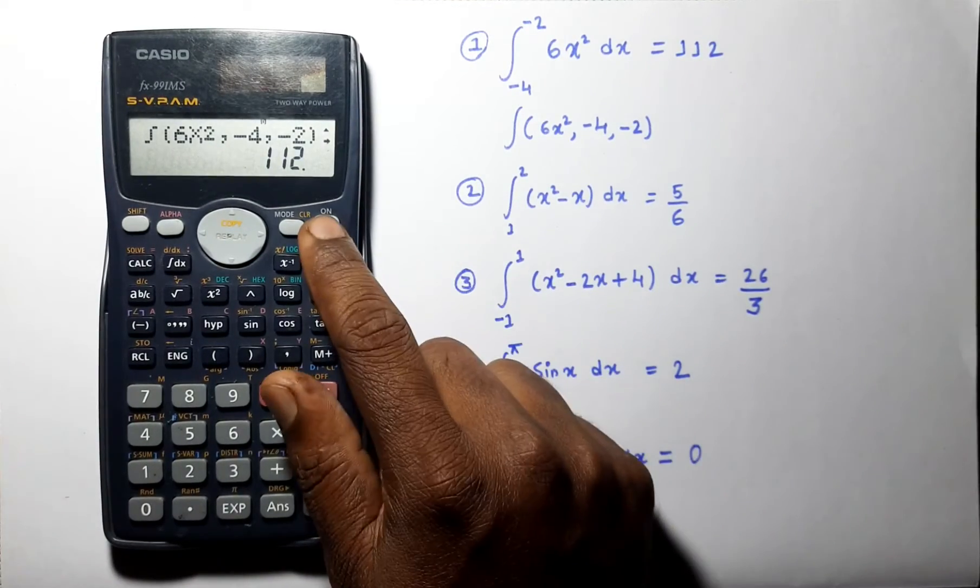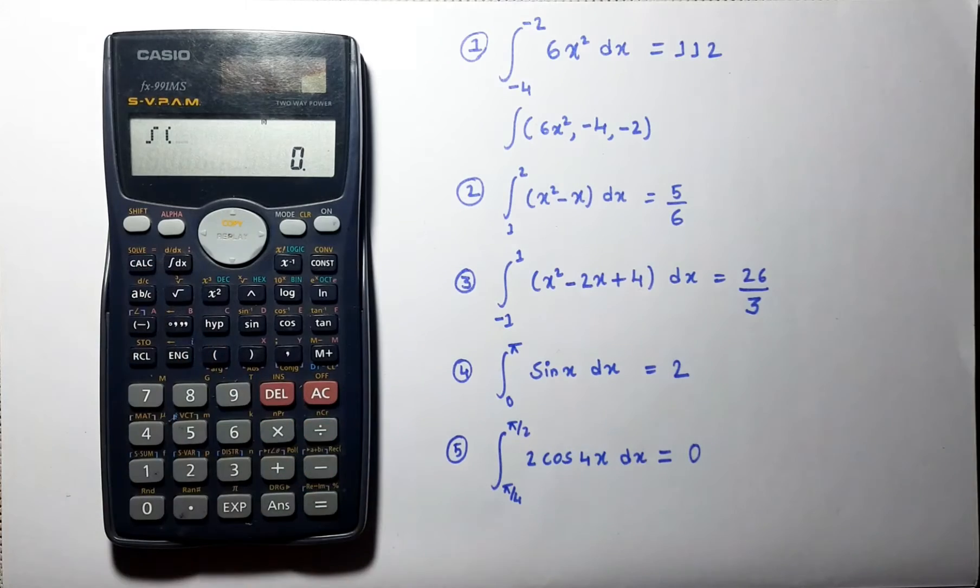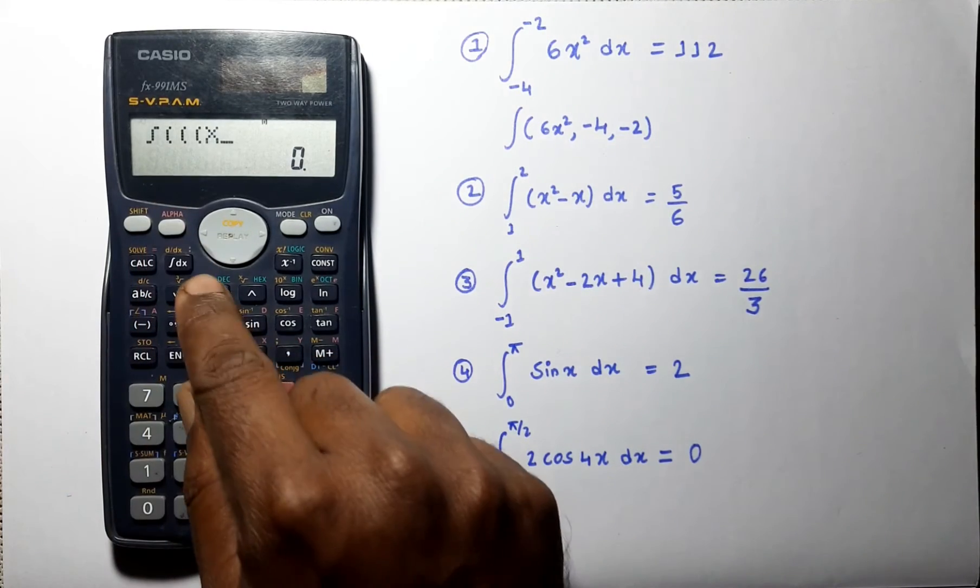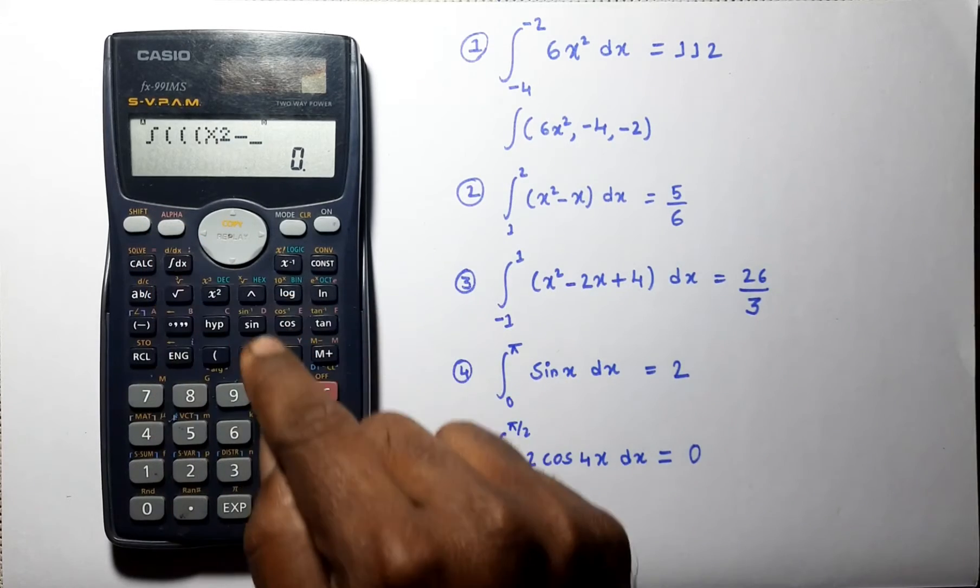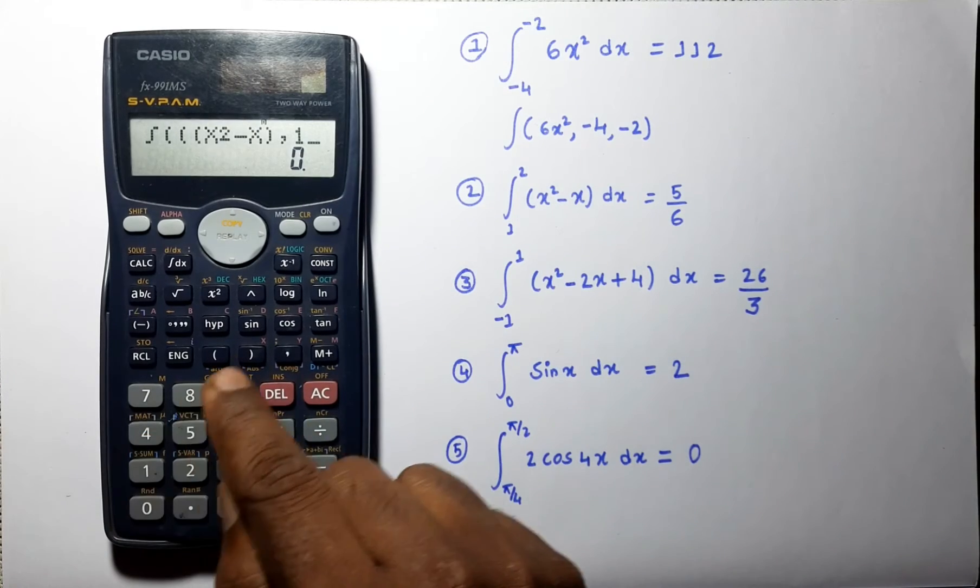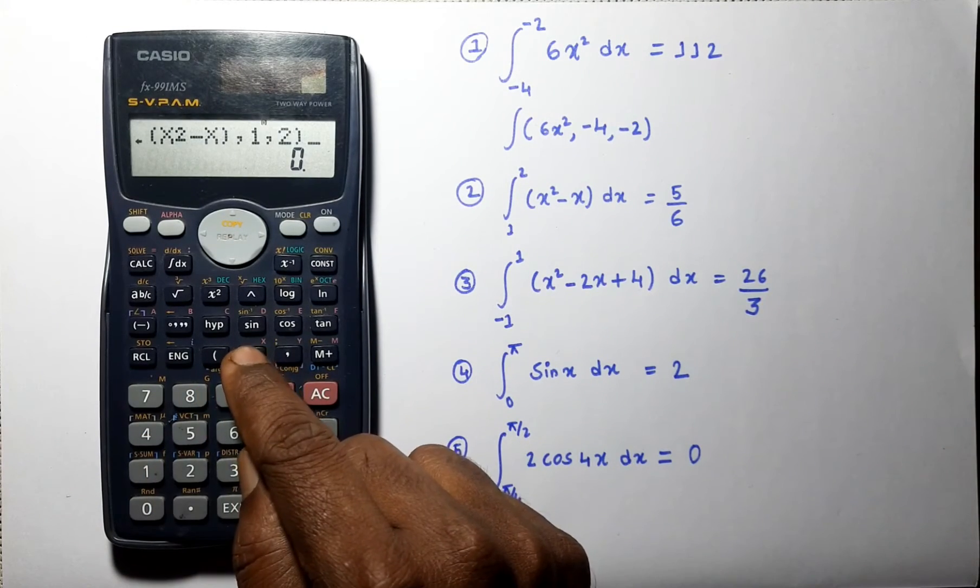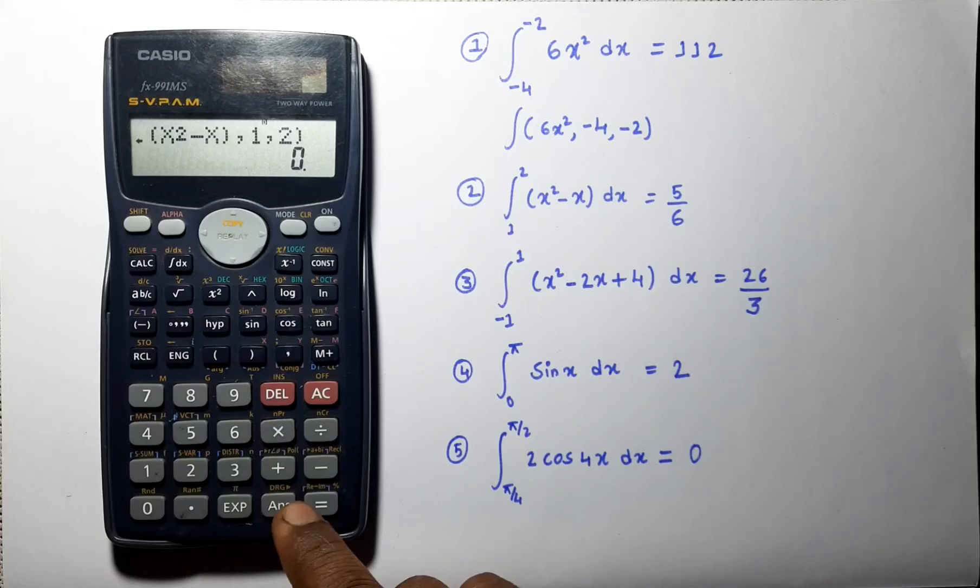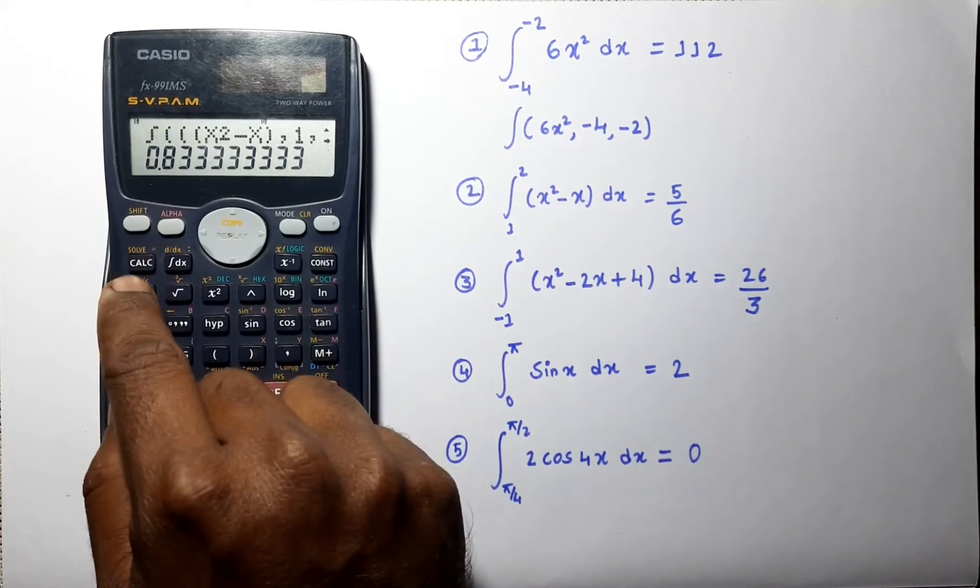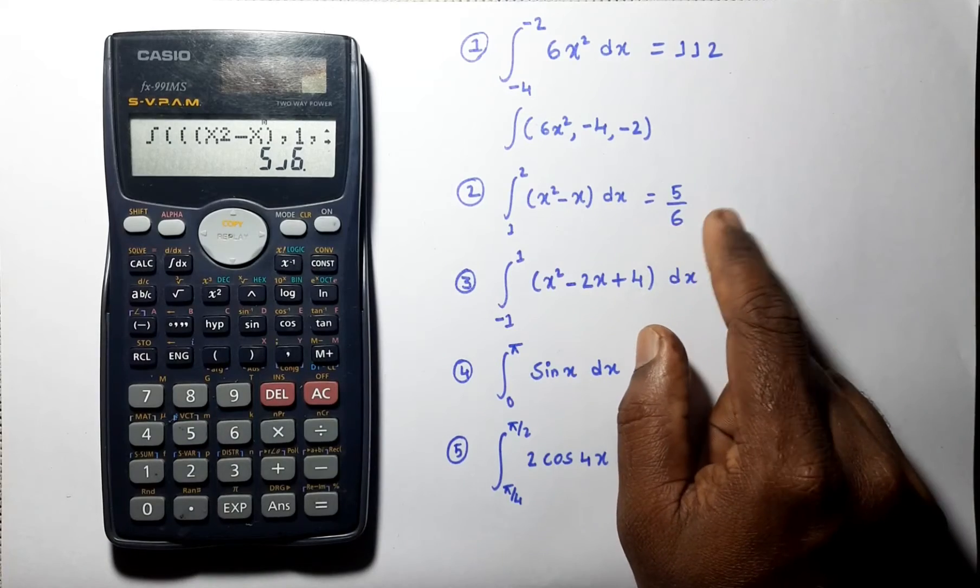Let us solve next problem. Integral of x square minus x. Limit varies from 1 to 2. Close the bracket and press equals. You can change this into fractions and you can check the answer here.